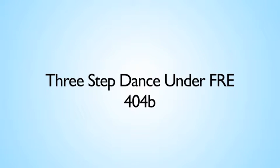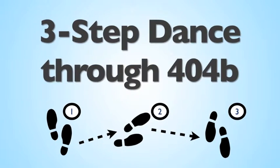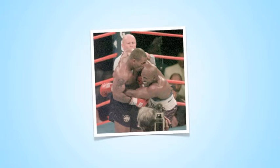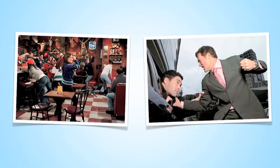It may be helpful to think of Rule 404(b) problems in terms of the following three-step analysis, which Professor Paul Gianelli has developed — the three-step dance through 404(b). Step 1: Propensity or Other Purpose? If one side seeks to offer evidence of other acts, consider whether this evidence is being presented to prove character propensity. If so, it is barred by the plain language of Rule 404(b). If not, consider whether the evidence is being offered for a valid other purpose — perhaps one of the illustrative purposes cited in Rule 404(b), or some other purpose that a creative litigant could come up with.